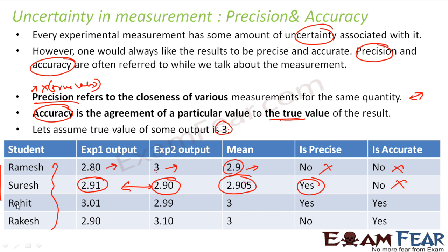Rohit found 3.01 and 2.99, and got a mean of 3. If you see these values, 2.99 and 3.01 are also close — so they are precise. Is it accurate? For accuracy, I have to check against the actual value, which was 3. The mean is 3, so they are almost exactly at the actual value. I can say that this is accurate also — it is both precise and accurate.